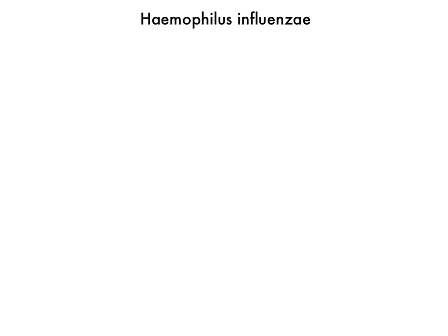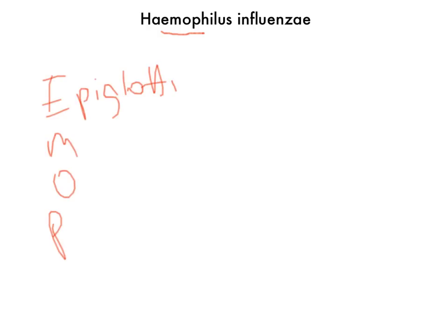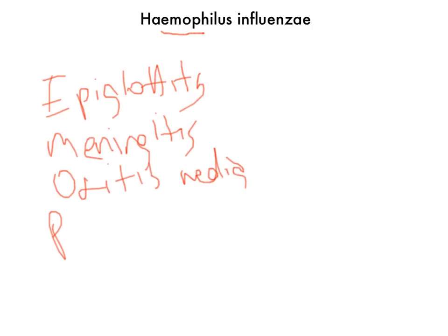What does Haemophilus influenzae cause? You have the mnemonic EMOP right here — that's basically what it causes: epiglottitis, meningitis, otitis media, and pneumonia.